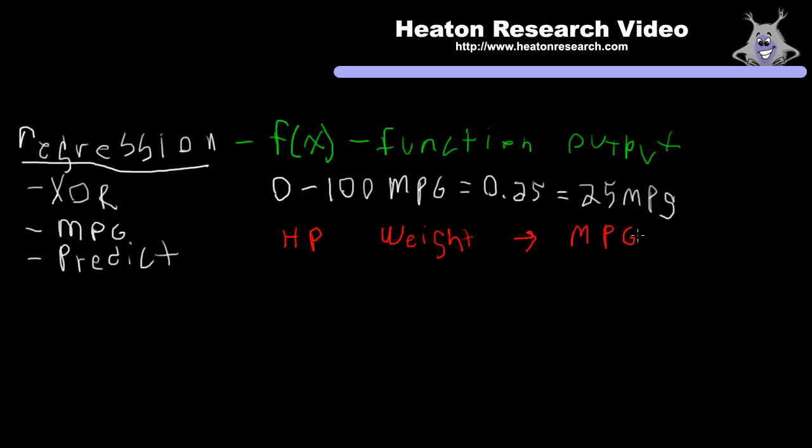Now the real example that I have on the website and on the Encog examples takes in quite a bit more data than this. I think there's about six or seven maybe more input criteria for the automobile. But just for simplicity we're going to just look at how we would represent these three items of data, two inputs and one output.